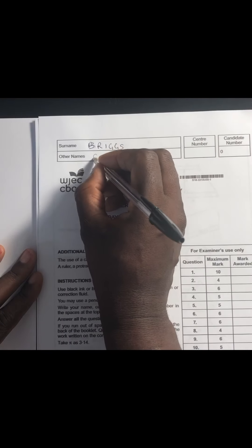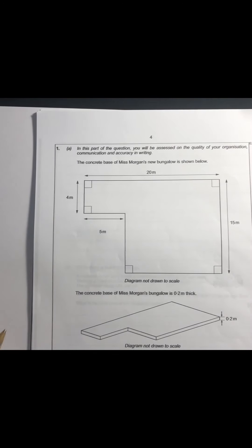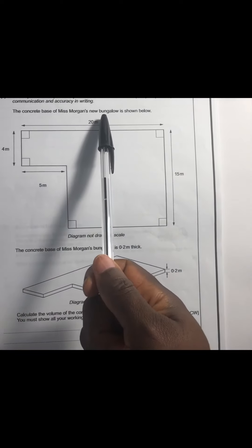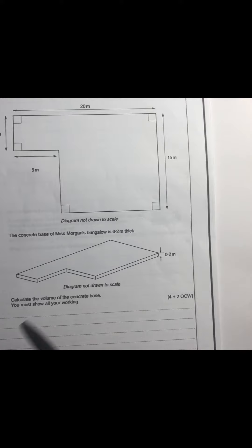My surname is Briggs and my first name is Gladys. Question one says the concrete base of Miss Morgan's new bungalow is shown below. The diagram is not drawn to scale and the concrete base is 0.2 meters thick. We need to calculate the volume of the concrete base and show all workings.